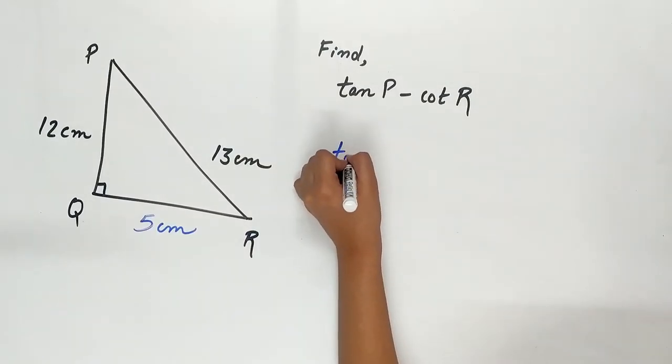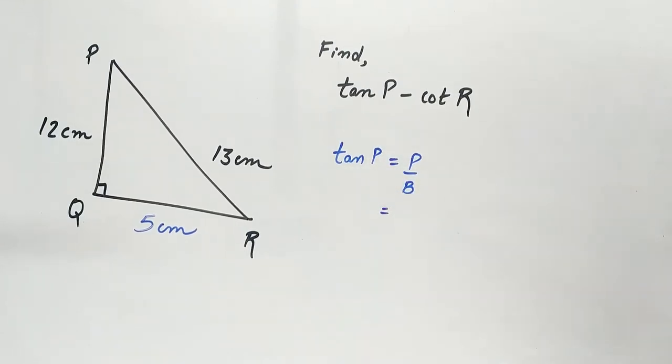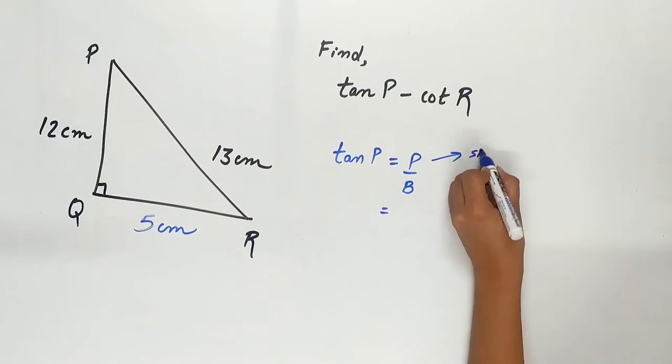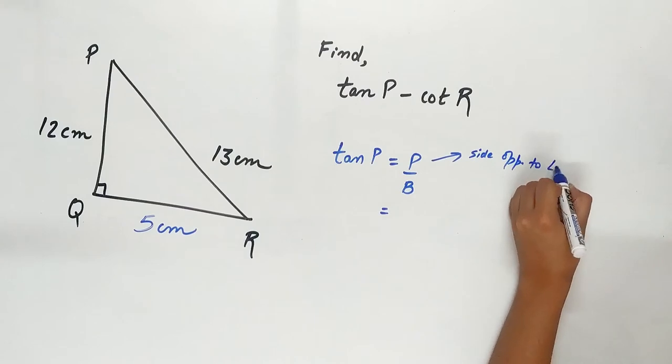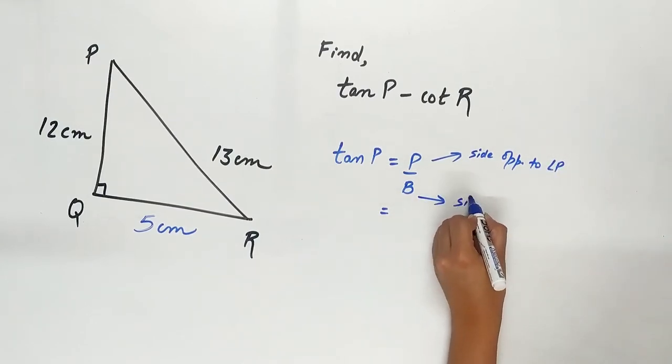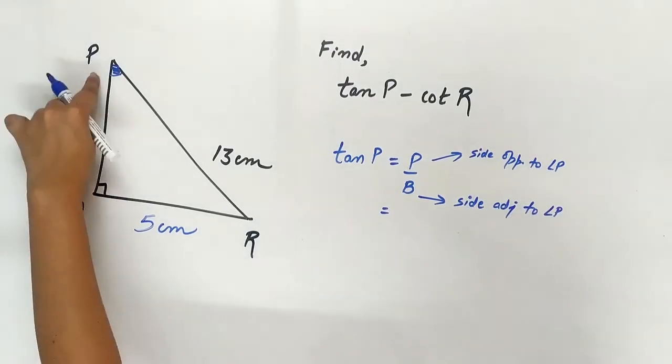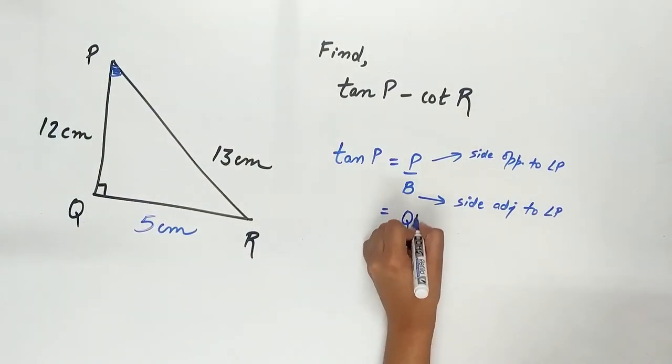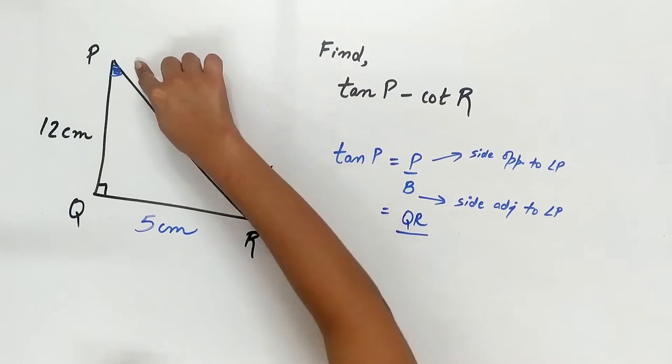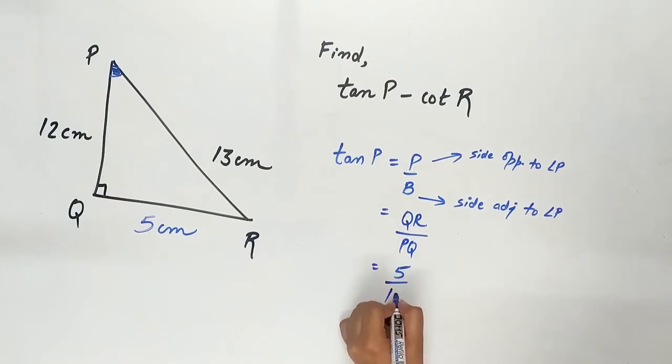Let's find out tan P. Tan P equals perpendicular upon base. Perpendicular is the side opposite to angle P, and base is the side adjacent to angle P. Side opposite to angle P is QR. Side adjacent to angle P is PQ. QR is 5, PQ is 12.